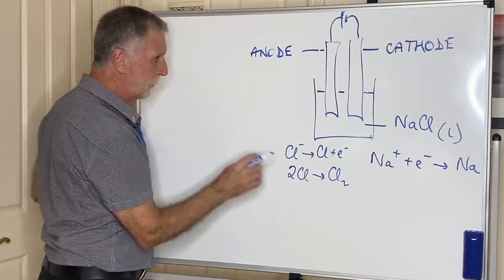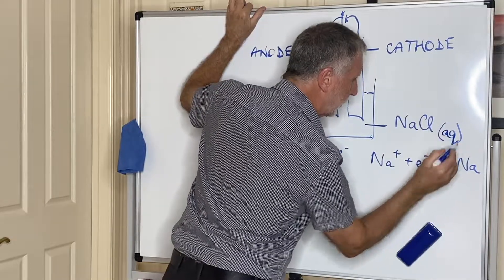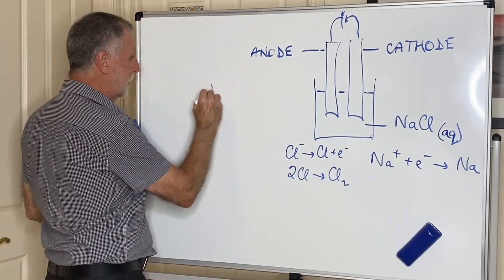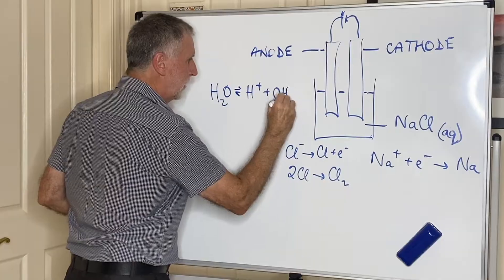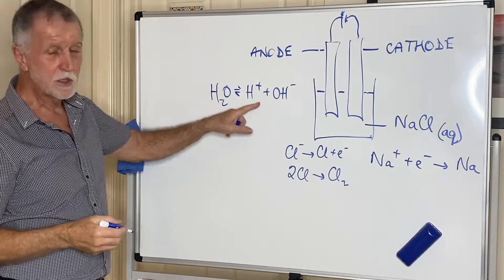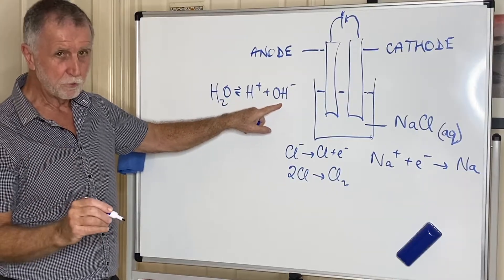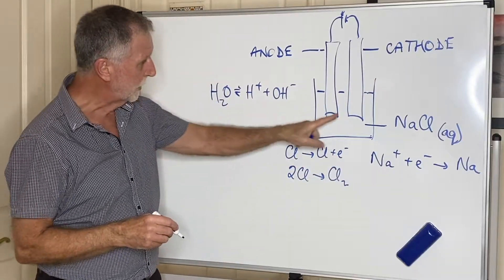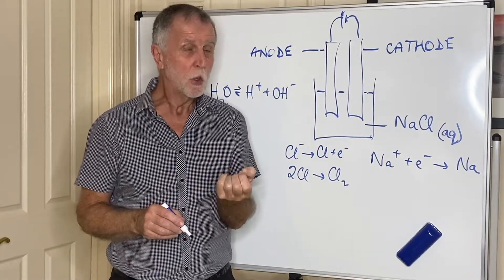What would happen if you now change this into aqueous? Well, unfortunately, we're now adding something else. As well as those ions there, we're going to be adding H+ and OH- ions from water. That is indicating that this doesn't happen very easily. There will be very, very few of those ions present, but you cannot ignore them. In fact, at the cathode, where sodium ions and hydrogen ions will now travel, there will be a competition. And whichever ion is easier to discharge will discharge.